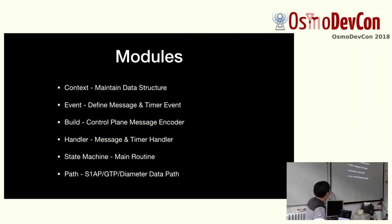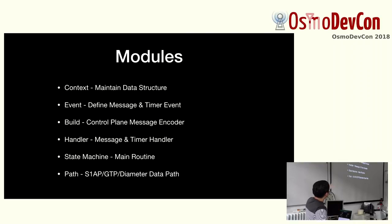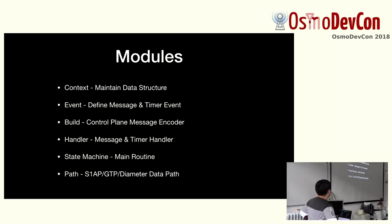The module block structure covers all five elements — MME, HSS, and others. Each module has: context (data structures), event build (encoders for S1AP, NAS, GTP, etc.), handler (message handling), state machine, and the main routine passing pointers for S1AP, GTP, and Diameter.